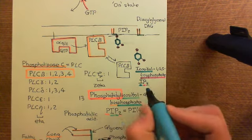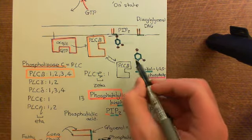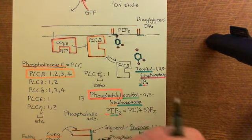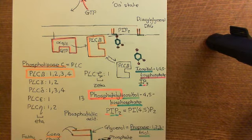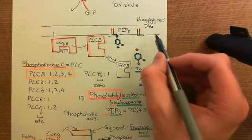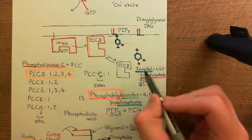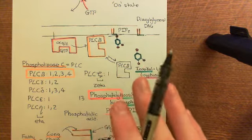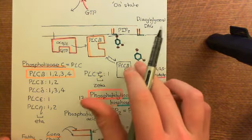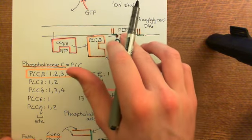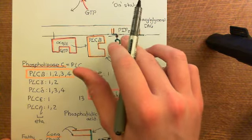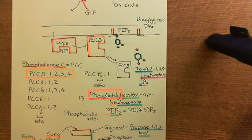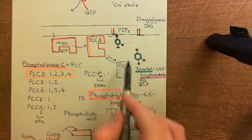Both molecules have extremely important signaling roles. IP3 acts on IP3 receptors in the ER membrane, causing them to open their calcium channels and release calcium from the ER. Diacylglycerol helps in the activation of protein kinase C enzymes, which also generally require calcium ions to activate. So the calcium released by IP3 works together with diacylglycerol to activate protein kinase C. Now, how do you turn this signaling pathway off and rebuild PIP2?